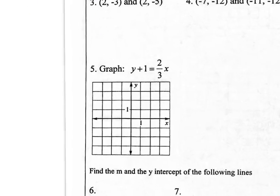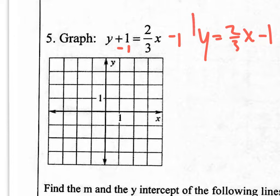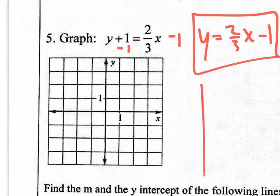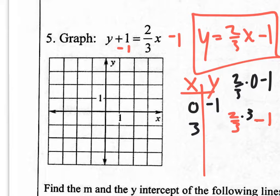Today we're also going to graph this equation. It's not in function form yet, so to get it in function form you're going to subtract 1 from both sides and you have y equals 2/3 x minus 1. This is now in function form. We used to graph with an xy table where you plug in 3 easy numbers. Zero always works — 2/3 times 0 minus 1 gives you negative 1. You could also plug in 3 because the denominator of the coefficient is 3, so 2/3 times 3 cancels out, leaving 2 minus 1, which equals 1.